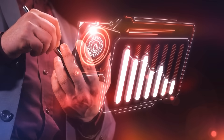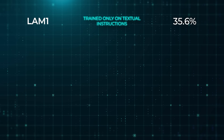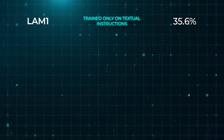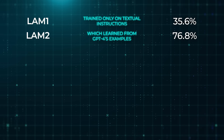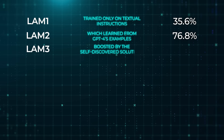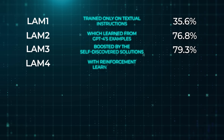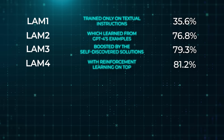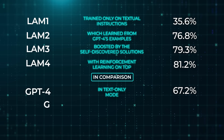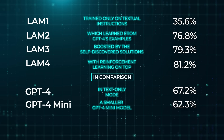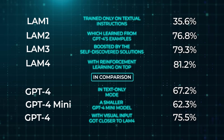The results showed improvements at every phase. LAM-1, trained only on textual instructions, achieved around 35.6% overall success in simulated tests. LAM-2, which learned from GPT-4's examples, rose to about 76.8%. LAM-3, boosted by self-discovered solutions, climbed to roughly 79.3%. LAM-4, with reinforcement learning on top, reached about 81.2%. In comparison, GPT-4 in text-only mode was around 67.2%, while GPT-4 mini was about 62.3%. GPT-4 with visual input got closer to LAM-4 at 75.5%, but still lagged behind.